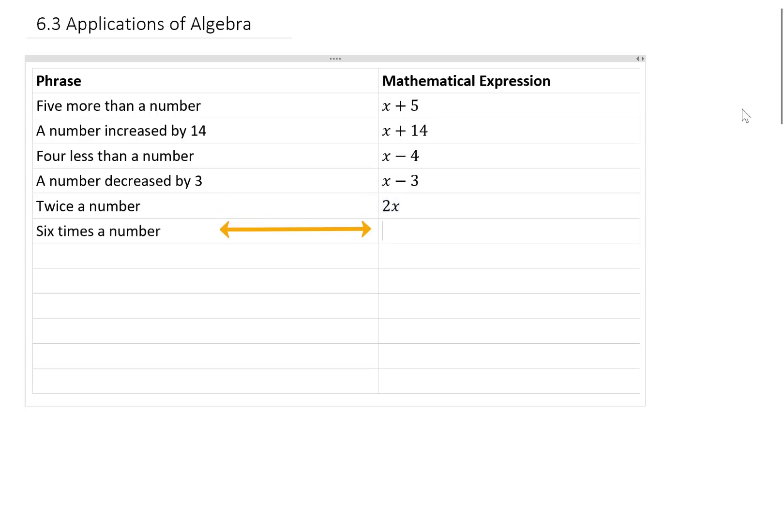The expression 6 times a number would be written as x times 6 or 6x. If our phrase is 9 decreased by a number, then our expression should start with that 9. And then if we're decreasing it by an unknown number, we will subtract x from it. If we have the phrase, the difference between a number and 13, the difference between that number and 13 would be x minus 13.